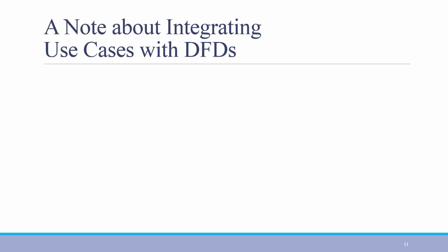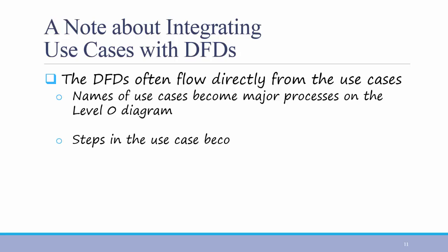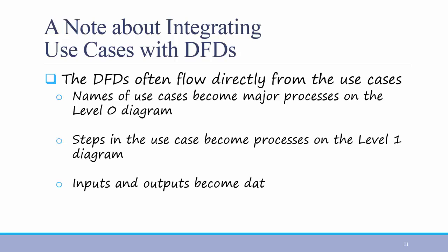One good way to create data flow diagrams is to build them from your use cases. They often flow directly from your use cases. The names of your different use cases often become the major processes on the level 0 diagram. And the steps within the use case often become the processes on the level 1 diagram. Inputs and outputs become data flows on the level 1 diagram and below.